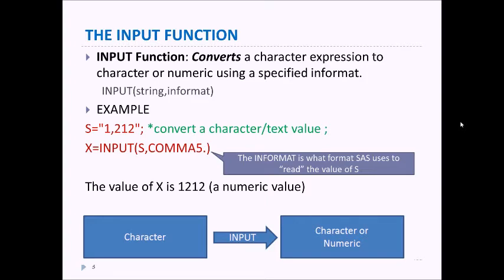For example, suppose we have a value S that is 1,212, a character or text value, and we want to convert that into a number. We could use the input format INPUT(S,COMMA5.), and the COMMA5. is the informat, which is what SAS uses to read the value of S. So it reads S, converts it to X, and then we have X as the value 1212, which is a numeric value.